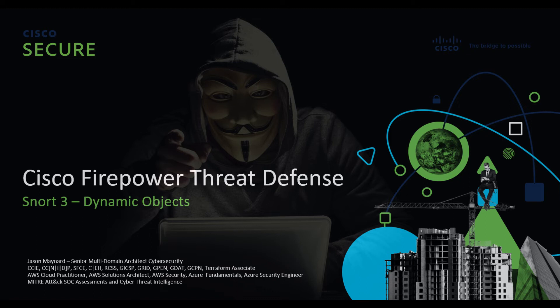Cisco Firepower Threat Defense Dynamic Objects. Since Firepower version 7.0, Cisco introduced dynamic objects — a new type of attribute available in access control policy. Dynamic objects are configured using a REST API interface of the FMC and, similarly to other dynamic attributes supported so far, this includes ISE and Active Directory. This updates Firepower in real time without the need for policy deployment.